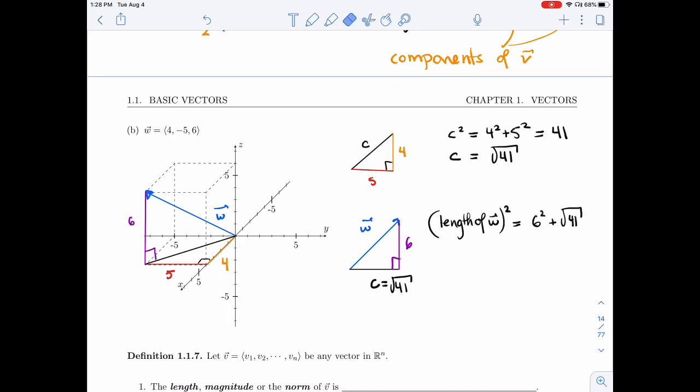Actually, let me write it in the opposite order. That will fit nicely in a second. So root of 41 squared plus 6 squared. So I'm getting 77, 41 plus 36. And so the length of W should be root of 77.